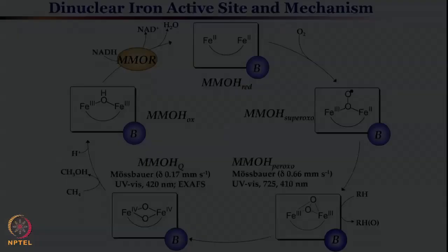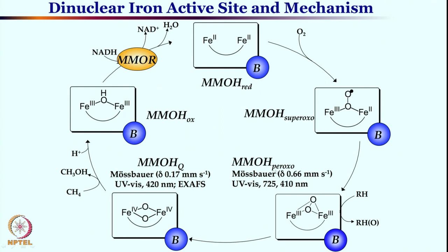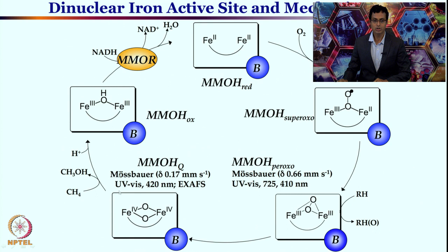The Fe(IV)/Fe(IV) dioxo species undergoes O–O bond cleavage to give the bis-mu-oxo species, which can react with methane — this is believed to be the true active species reacting with methane to give methanol. The peroxo intermediate and the bis-mu-oxo intermediate have completely different oxidation states and therefore completely different spectral behaviors, so they can be characterized confidently by different spectroscopic techniques.